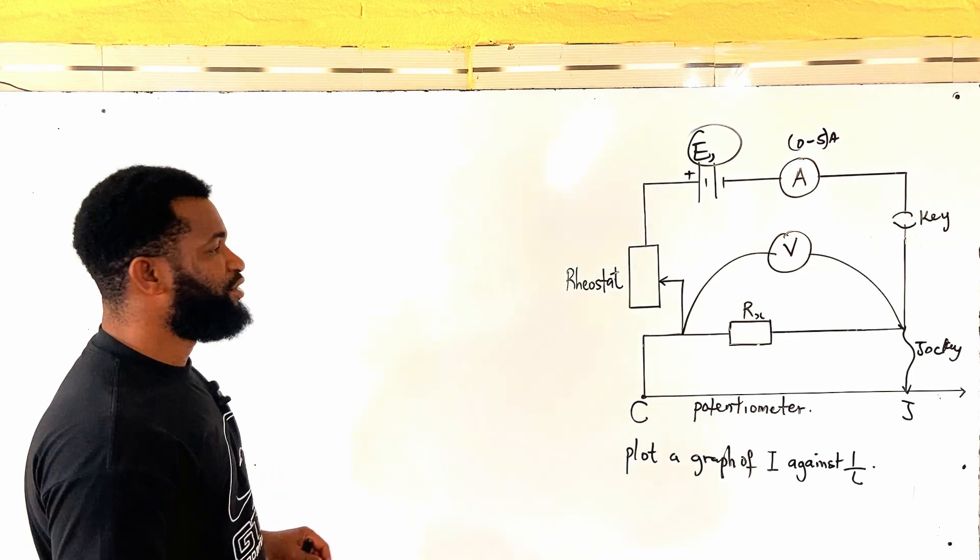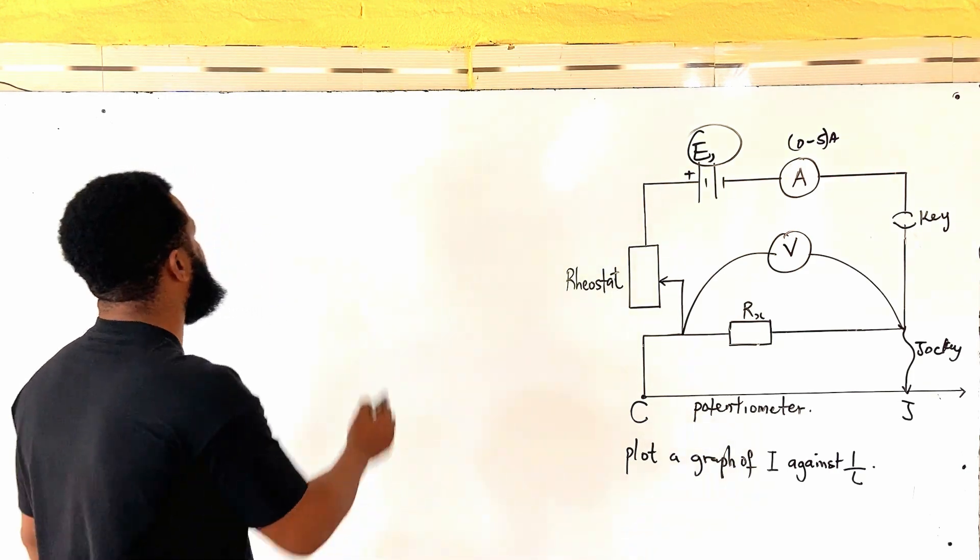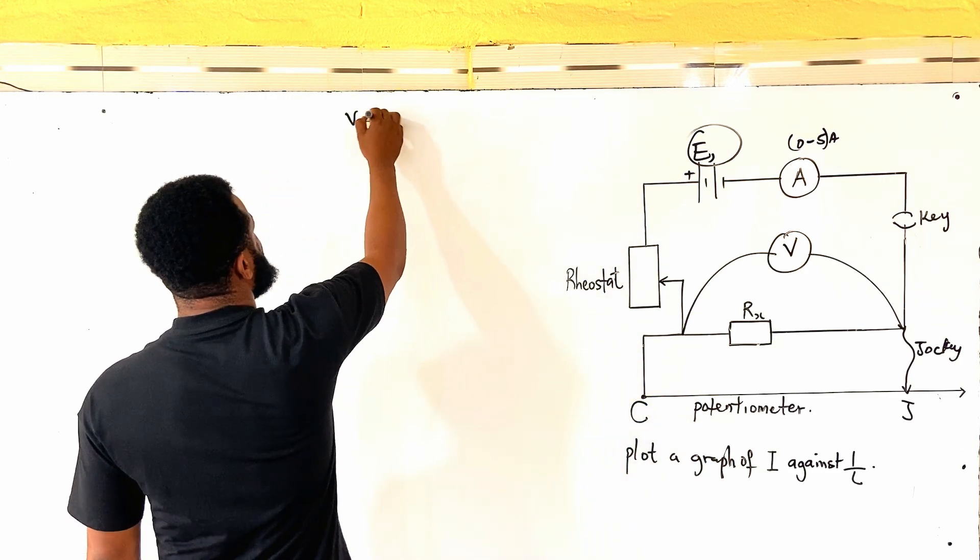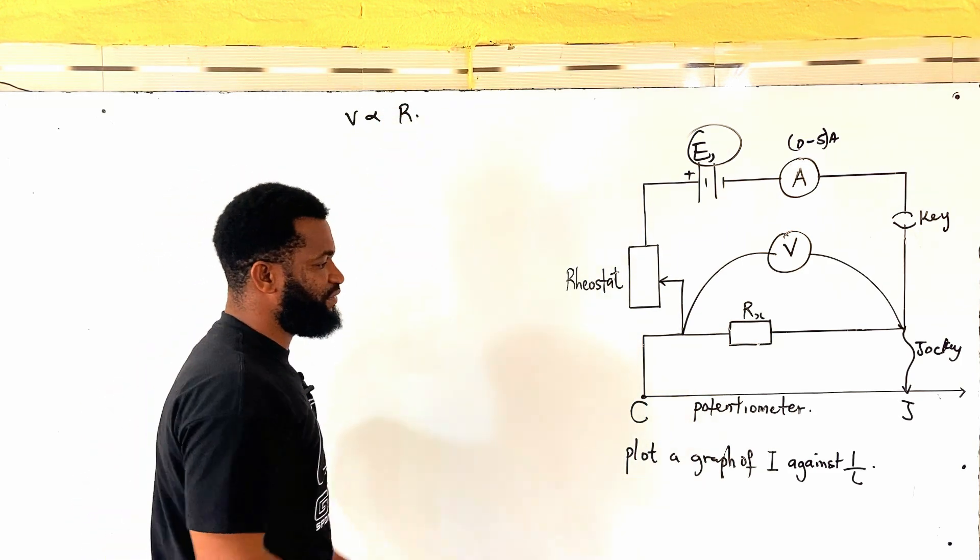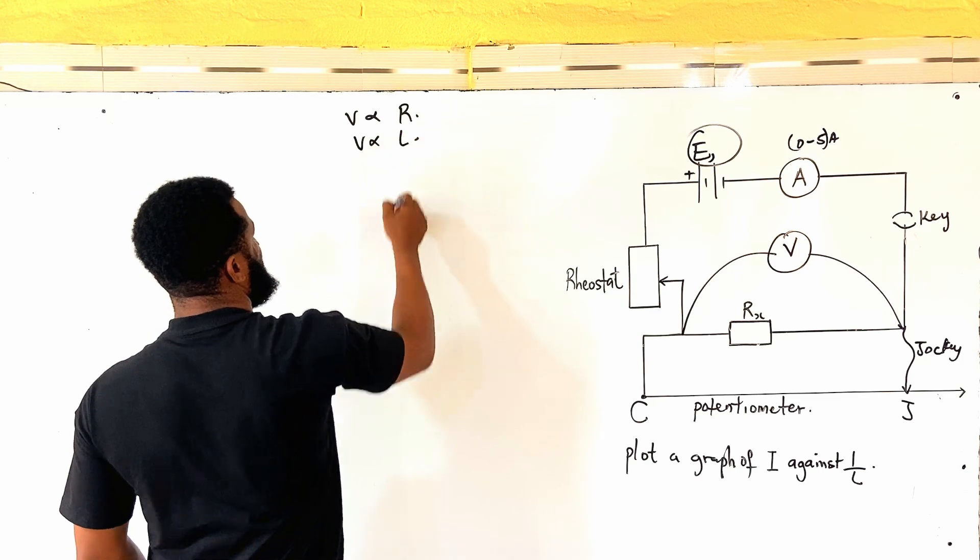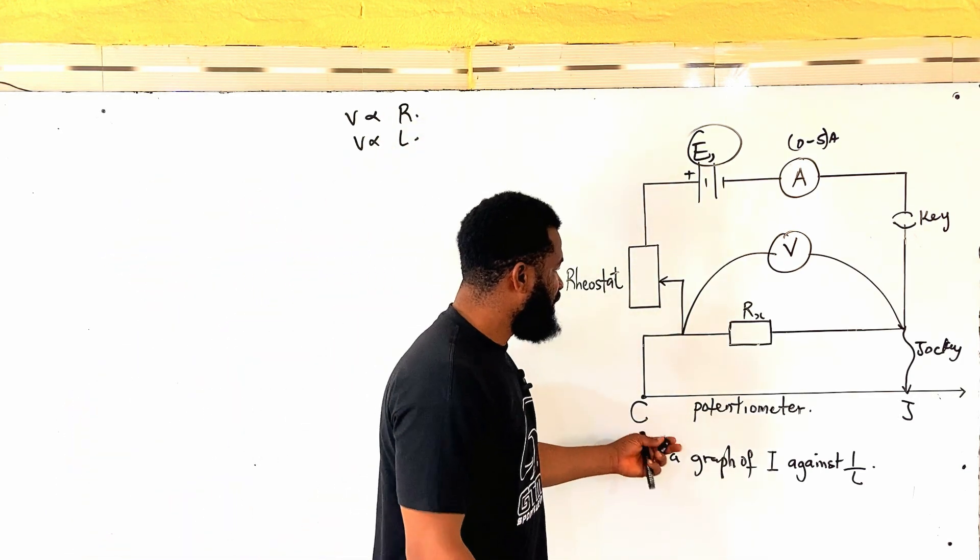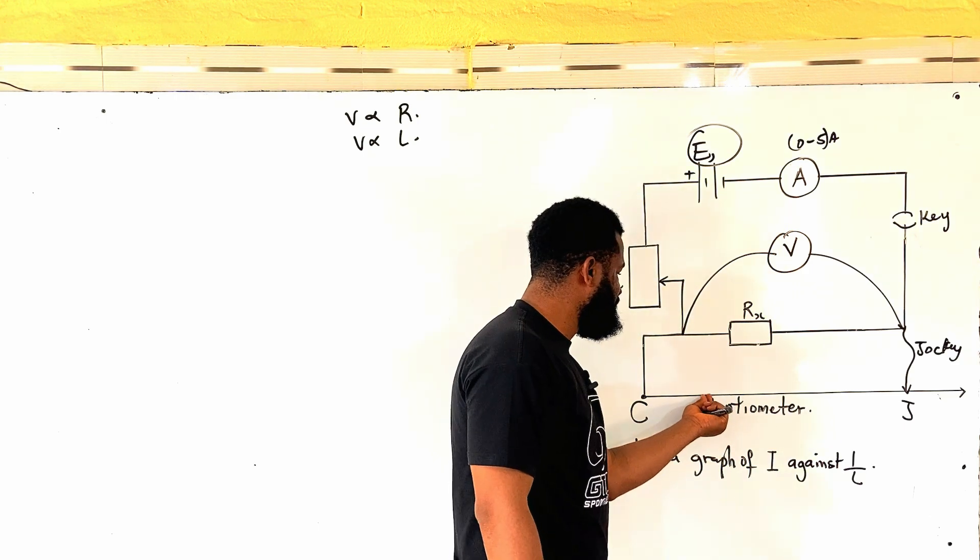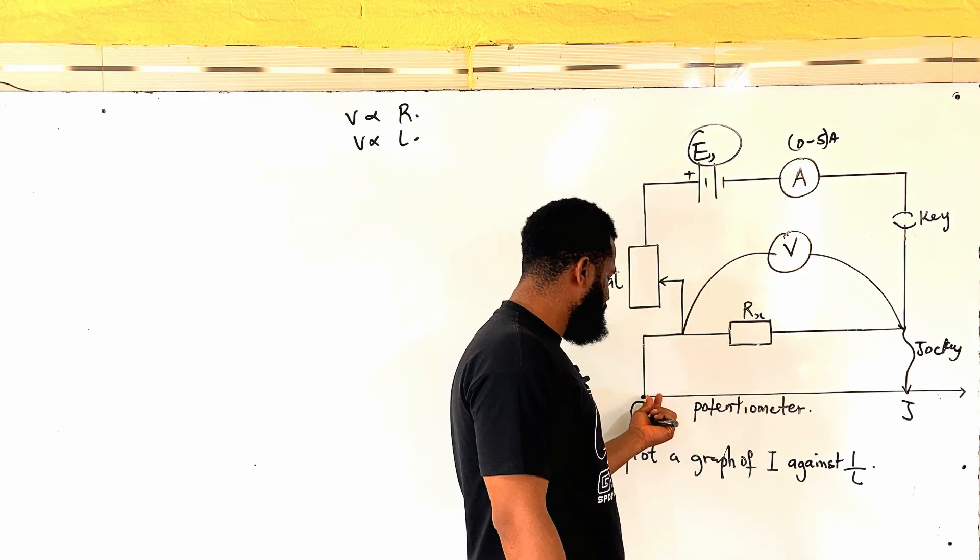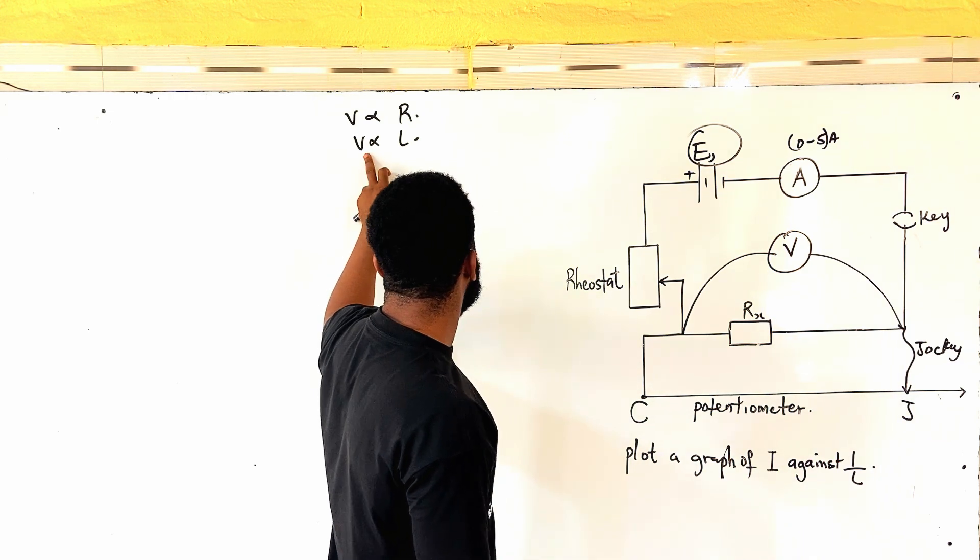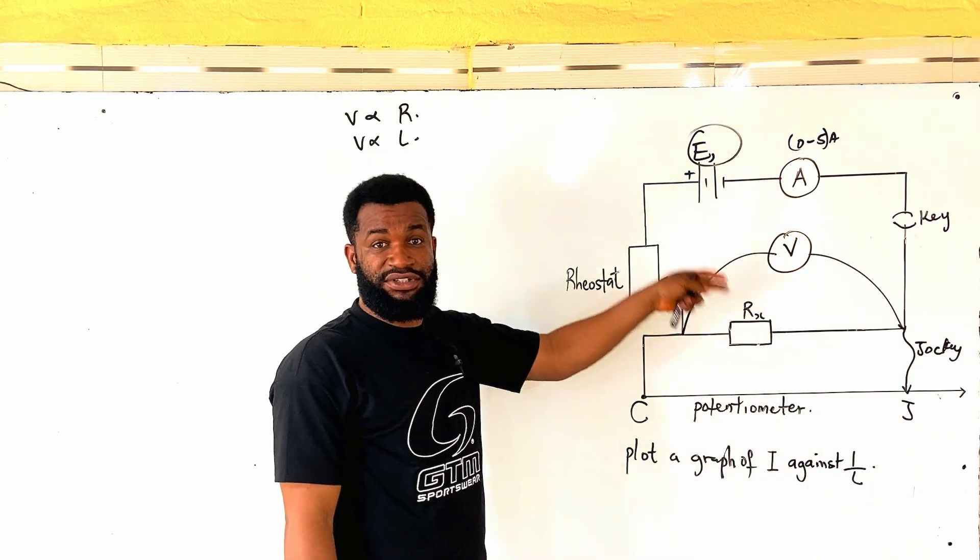Remember that we agree that V increases with resistor because of the length. We also know that V is highly proportional to length, and length is highly proportional to resistor. So as the jockey is increasing, maybe from here to here is increasing in value, the voltage is likely to increase.